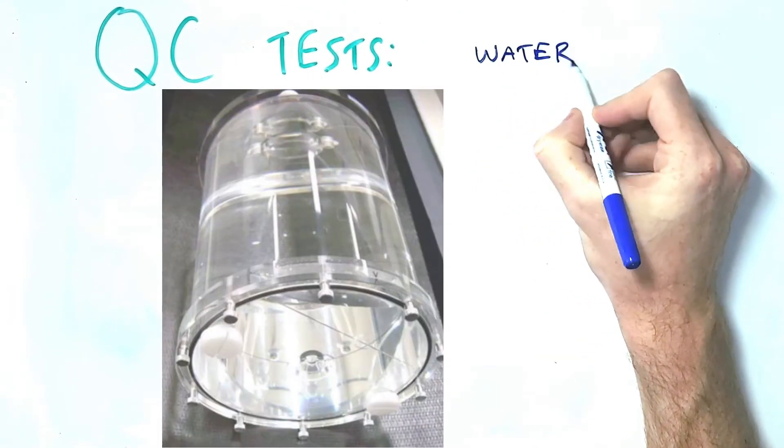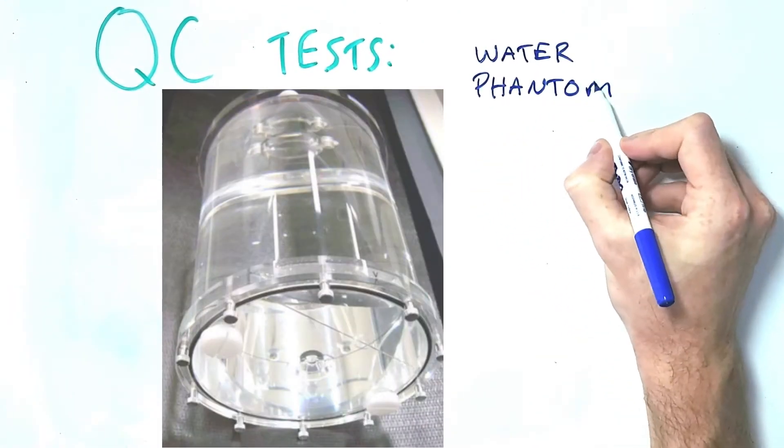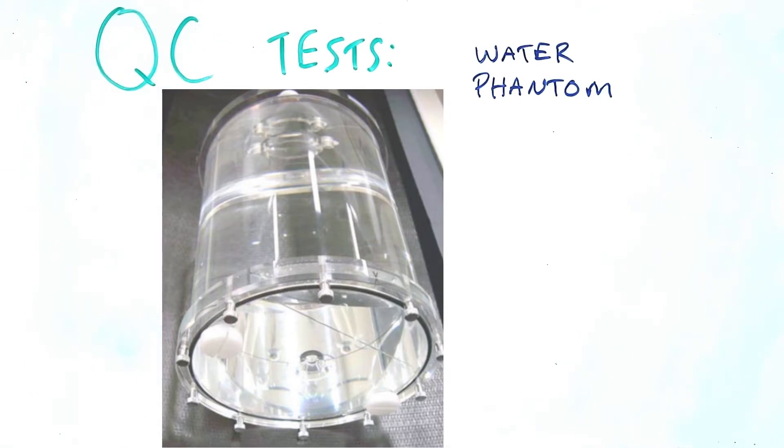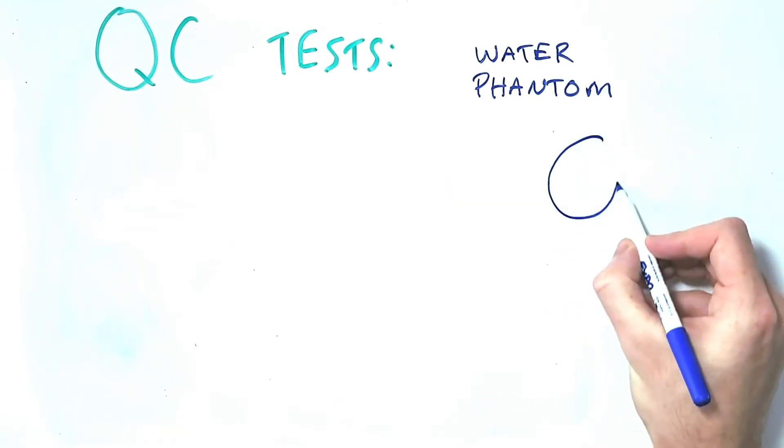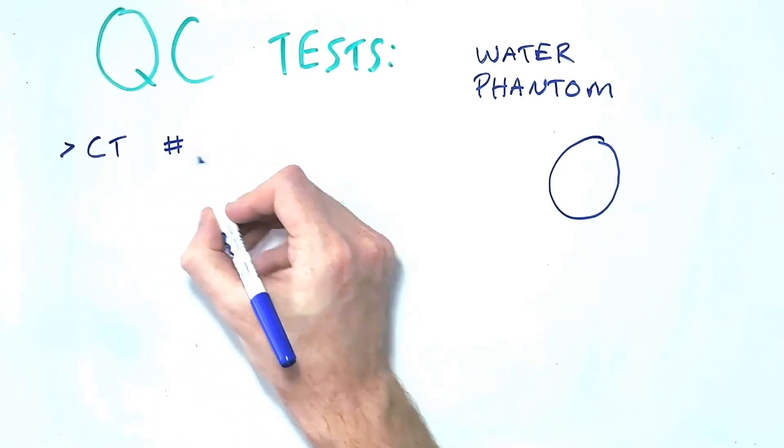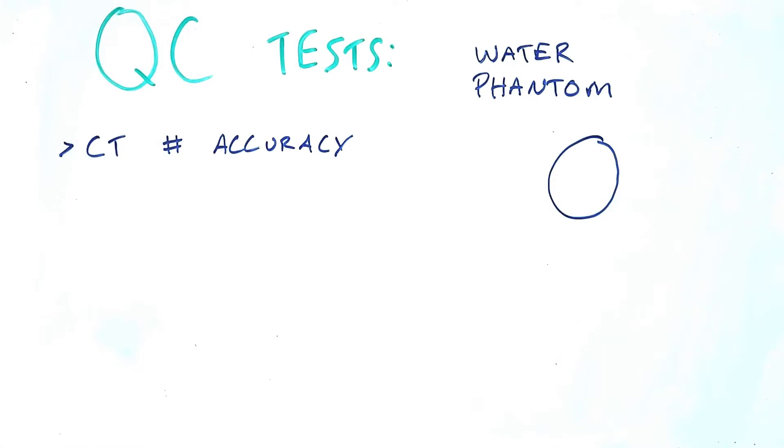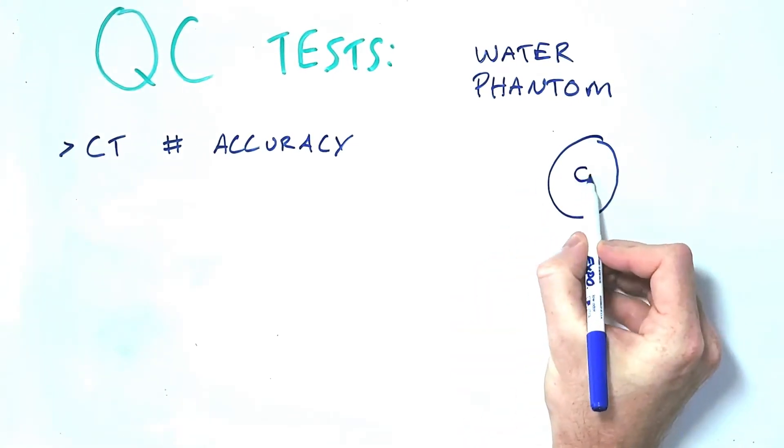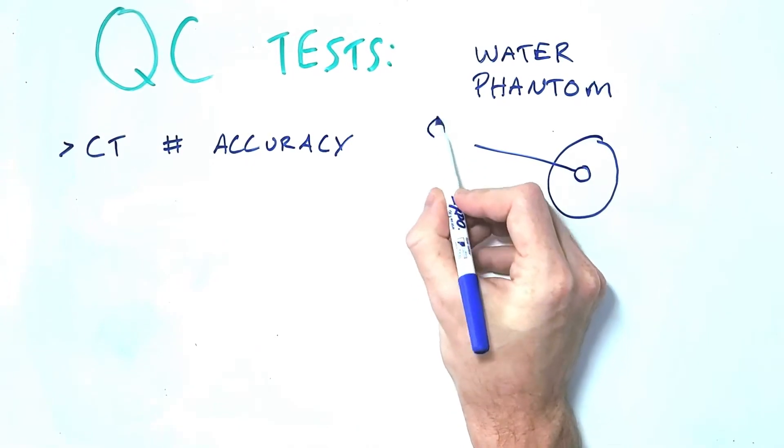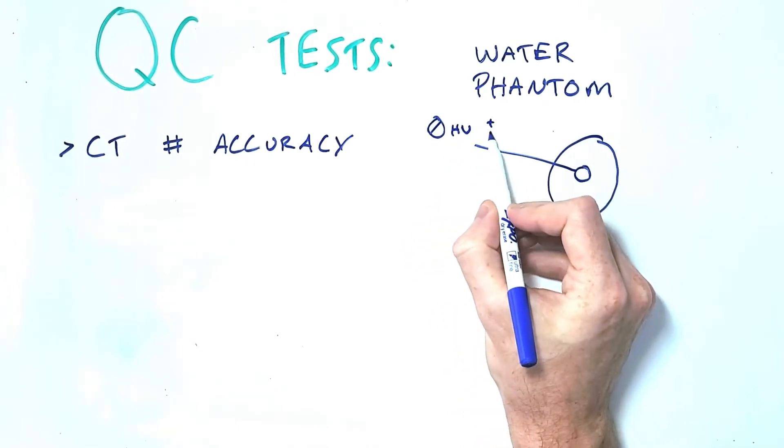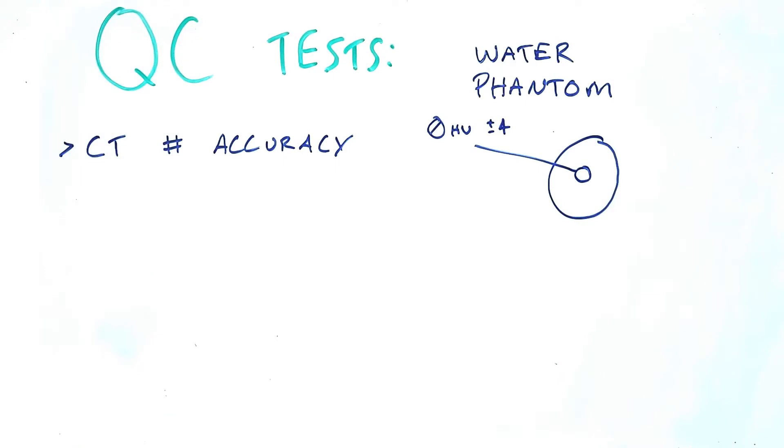Many QC tests are going to be performed with an acrylic phantom or a water phantom. As we know the CT number of water is 0 Hounsfield units so one of the most basic QC tests we'll do is to test the CT number accuracy by scanning the water phantom and assessing how close to 0 that number is in the middle of the phantom. The CT number for water should vary from 0 by no more than plus or minus 4 Hounsfield units.